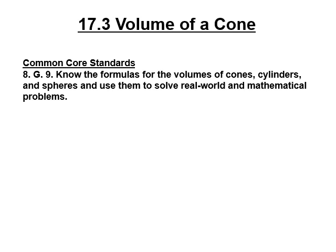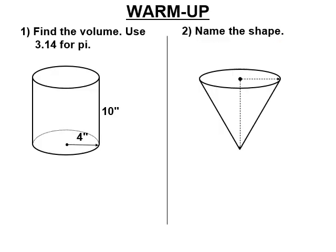Welcome to 17.3, volume of a cone. In this lesson we'll learn why the ice cream cone is so prevalent. First, let's make sure we can find the volume of a cylinder. The volume of a cylinder is exactly pi r squared times the height h, approximately 3.14 times the radius squared times the height.